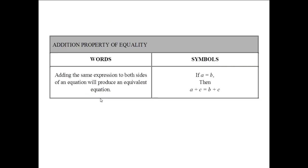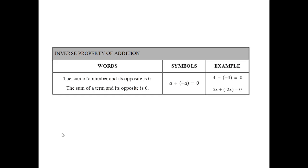The addition property of equality states that adding the same expression to both sides of an equation will produce an equivalent equation. For example, if we start with the equation a equals b and add c to both sides, we produce an equivalent equation. The inverse property of addition states the sum of a number and its opposite is 0. For example, 4 plus negative 4 equals 0, and 2x plus negative 2x equals 0.